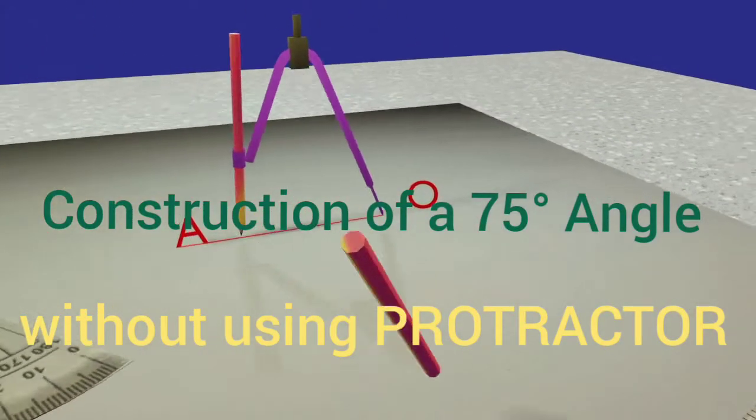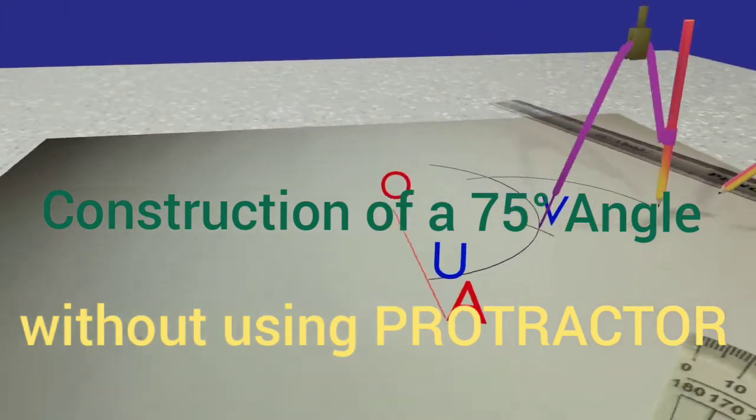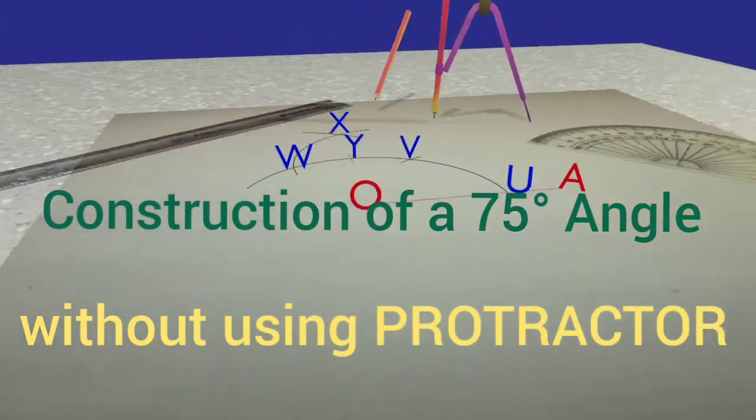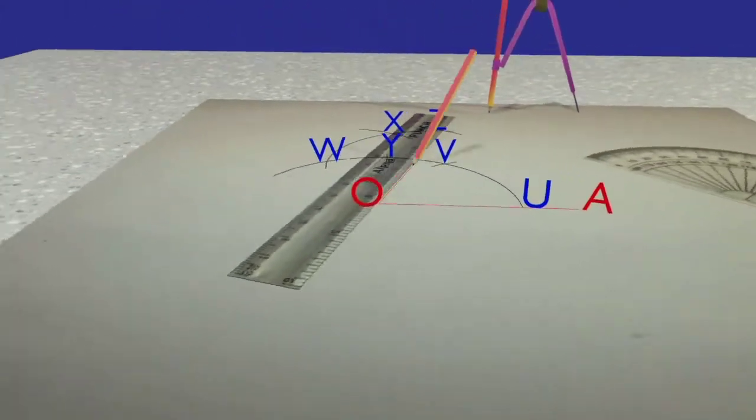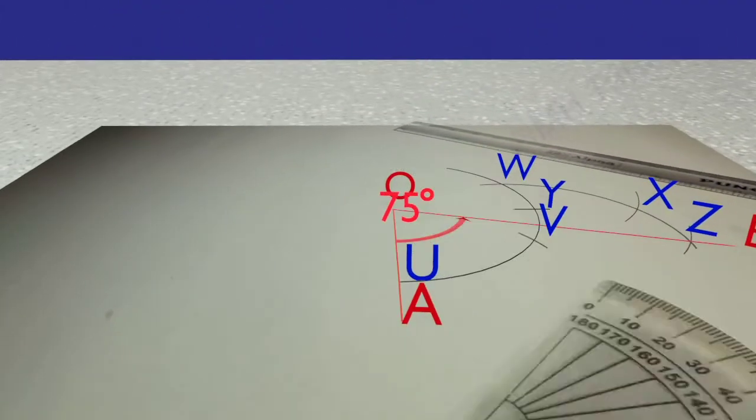Construction of a 75 degree angle without using a protractor is an important geometry assignment in high school mathematics. In this animation video, we are going to watch all the steps of drawing a 75 degree angle.